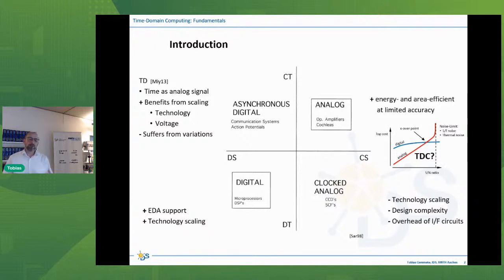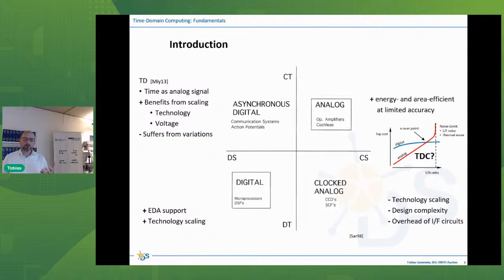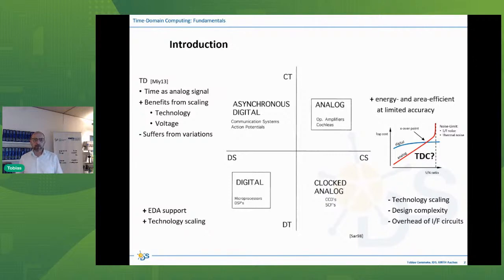However, in the digital domain, significant effort goes into maintaining synchronization — margins are added to account for systematic and random variations. In time domain computing, since time is an analog signal, those variations are not filtered out on a cycle-by-cycle basis as in synchronous digital design. This is one of the key challenges to address when pursuing time domain computing.